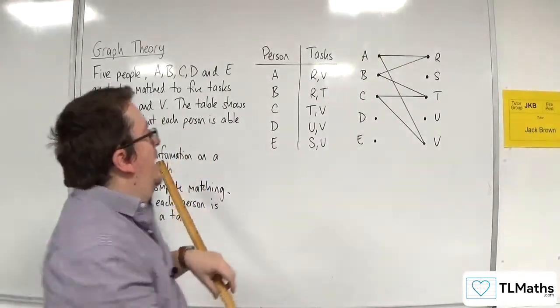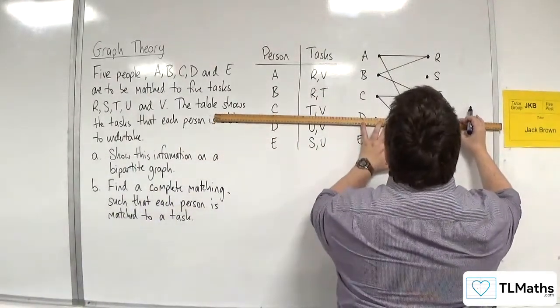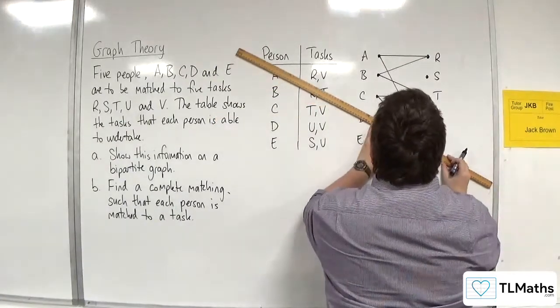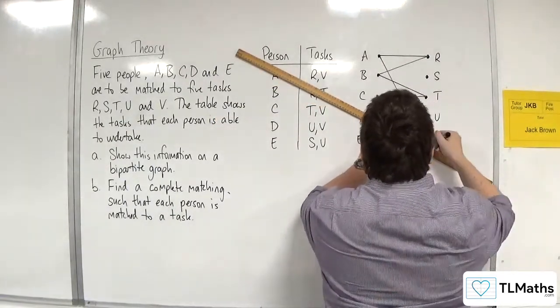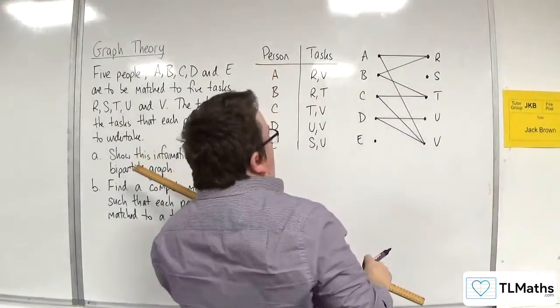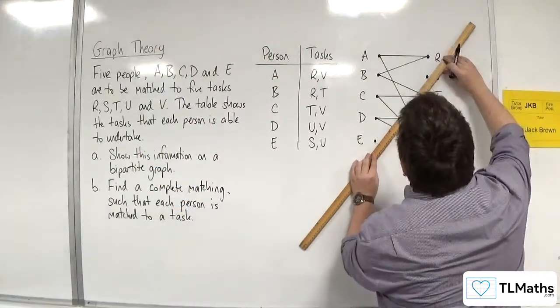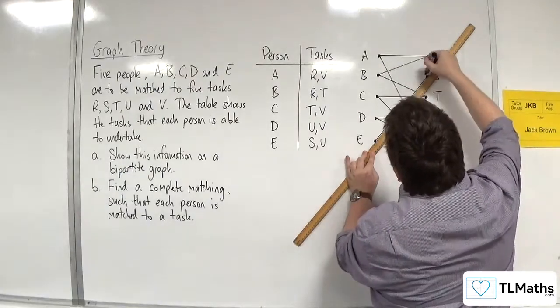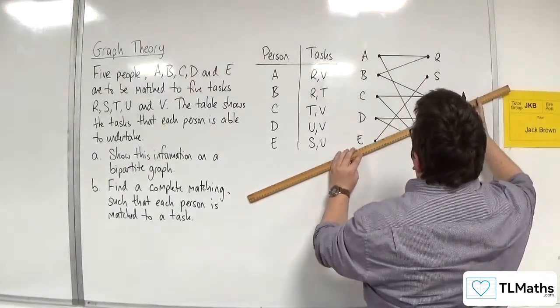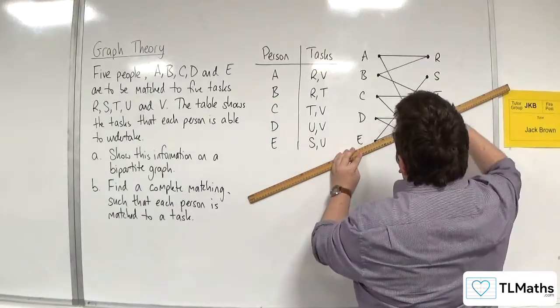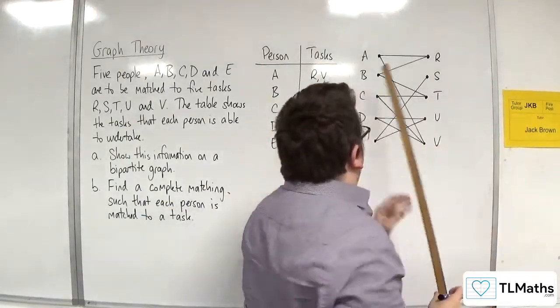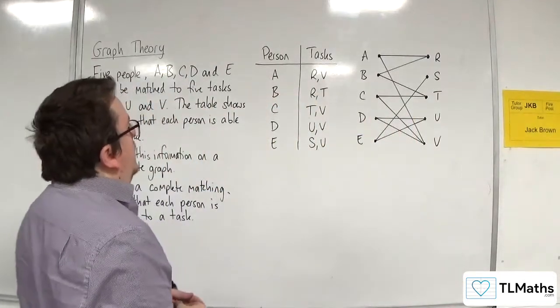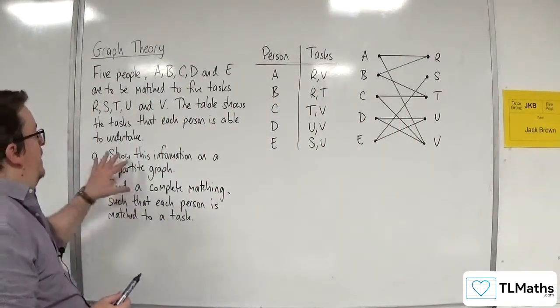Then we've got D can do U and V. And then E can do S and U. Right, so that is my bipartite graph. That's part A.